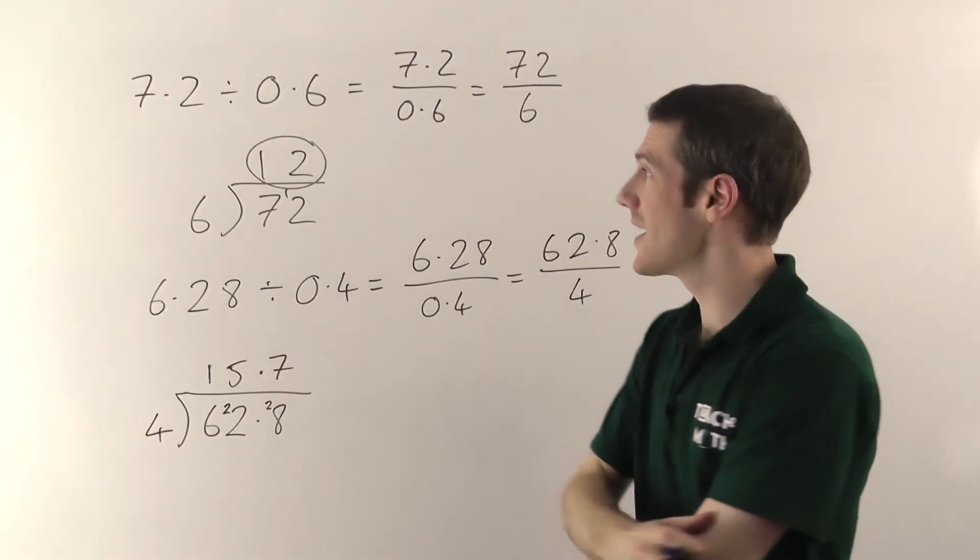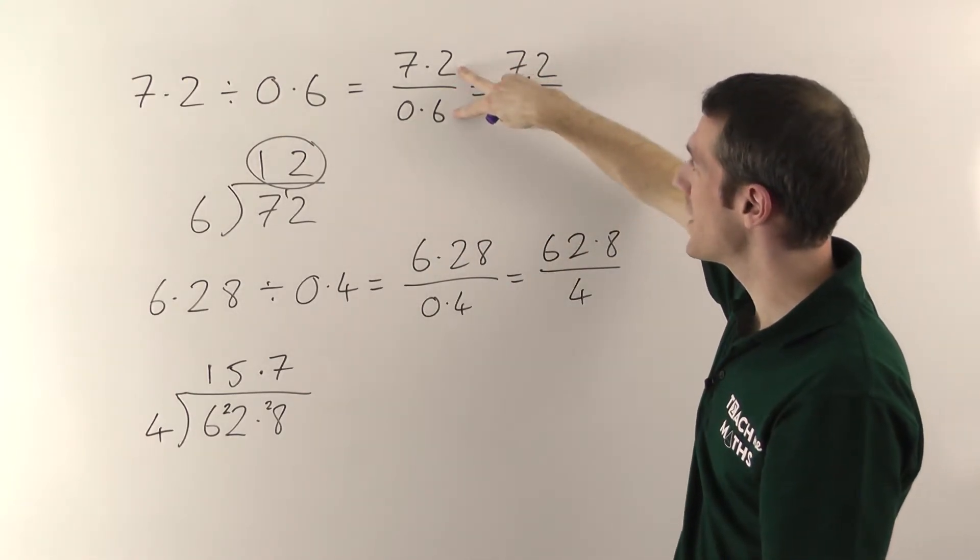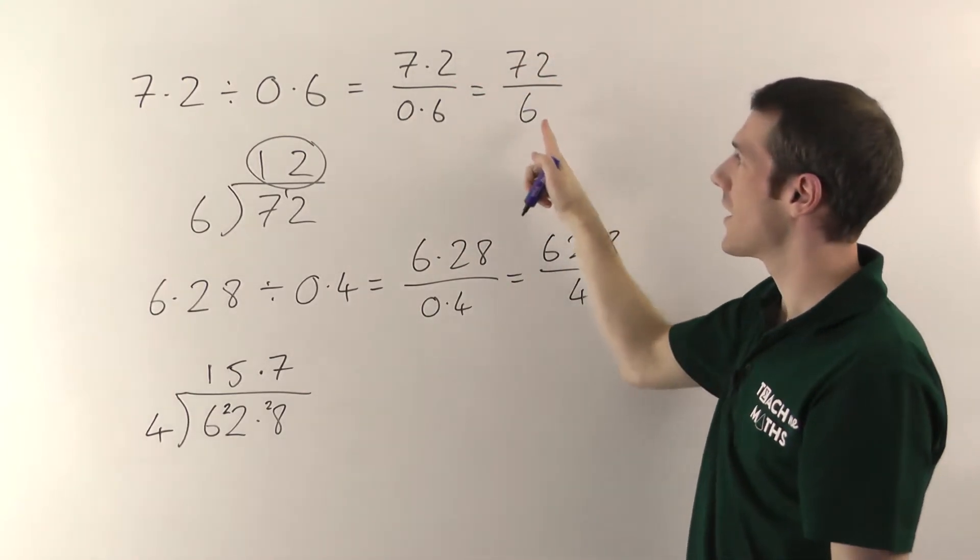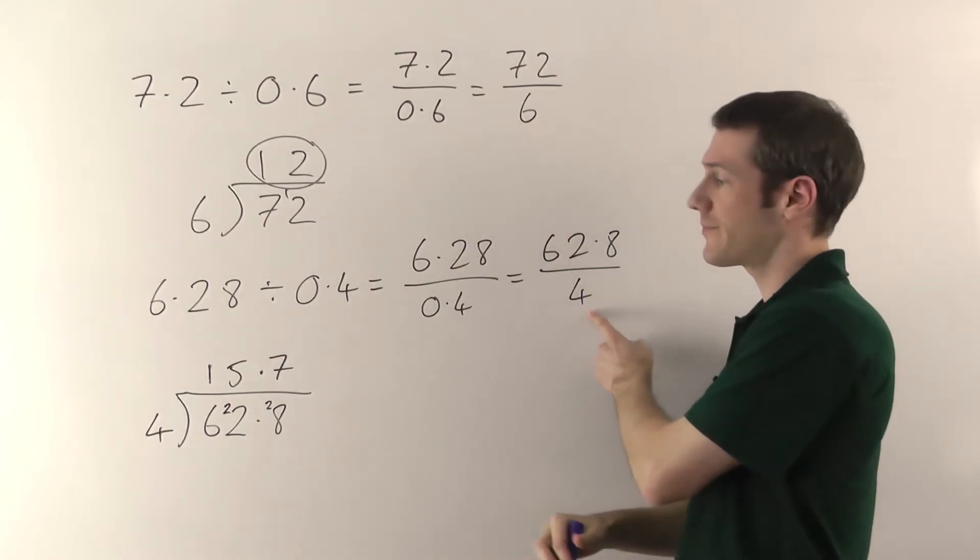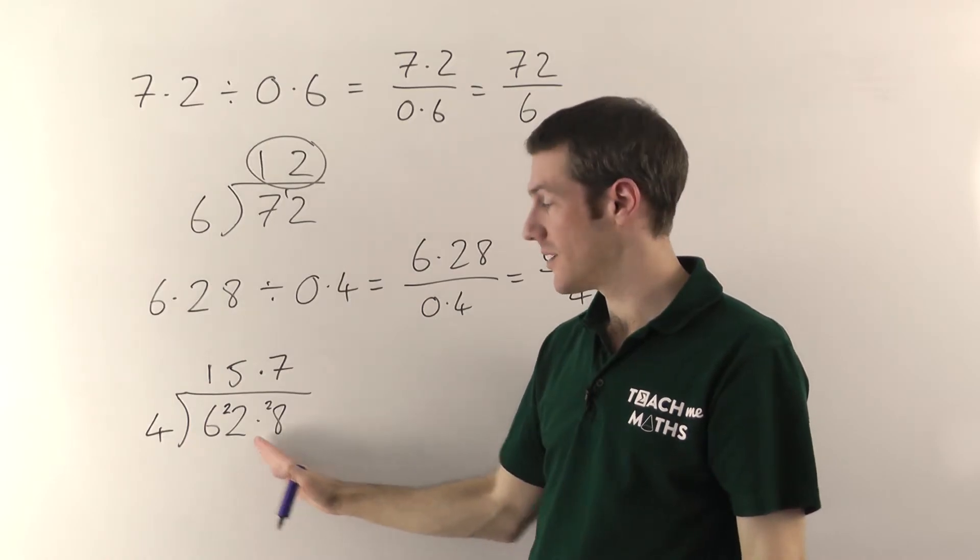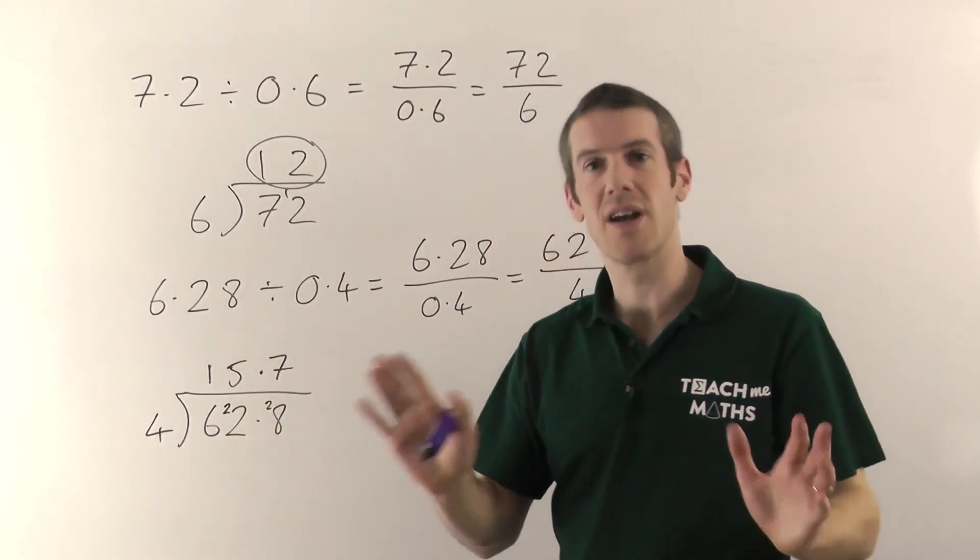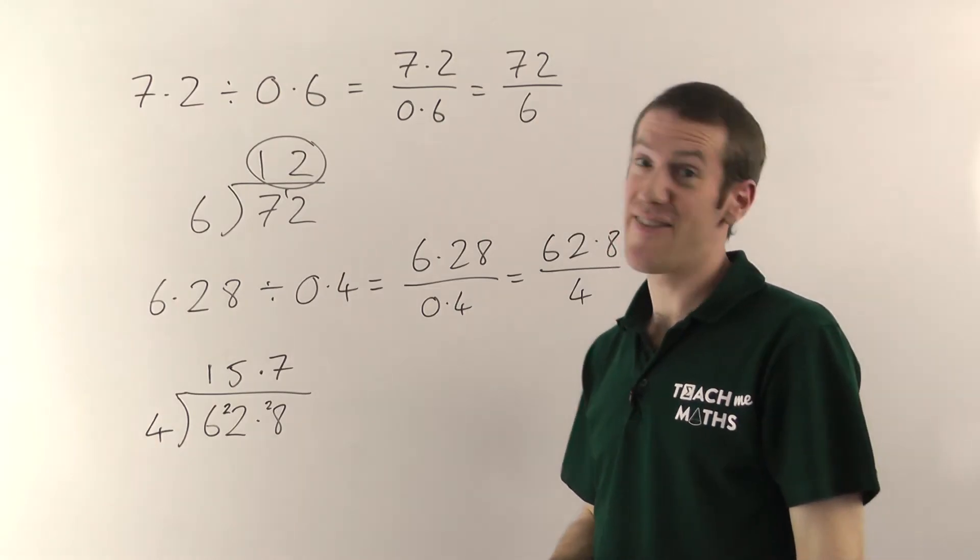So just to reiterate, the method when dividing decimals: write it as a fraction, keep multiplying the top and bottom by 10 until you can get a whole number on the bottom. Then just do the division. Normally, if you end up with a decimal number, just keep the columns lined up with a decimal place above it. It'll all work out fine.